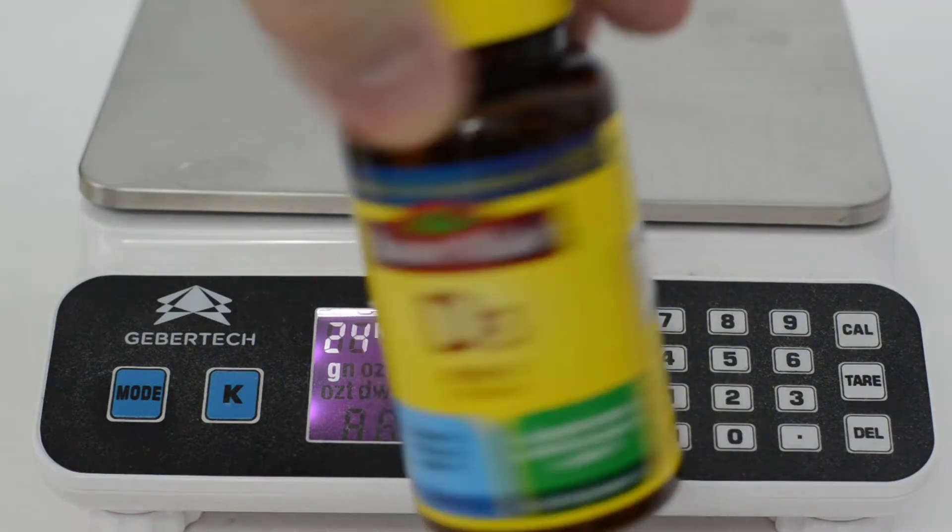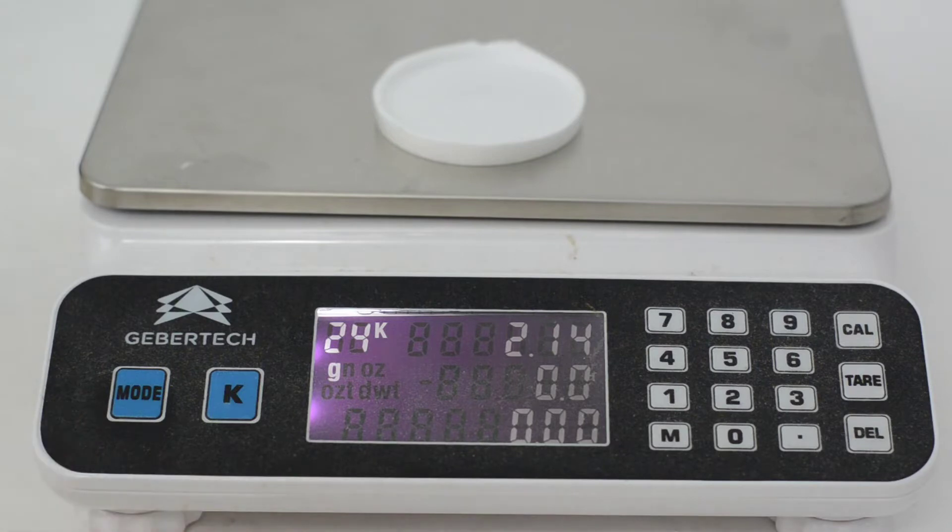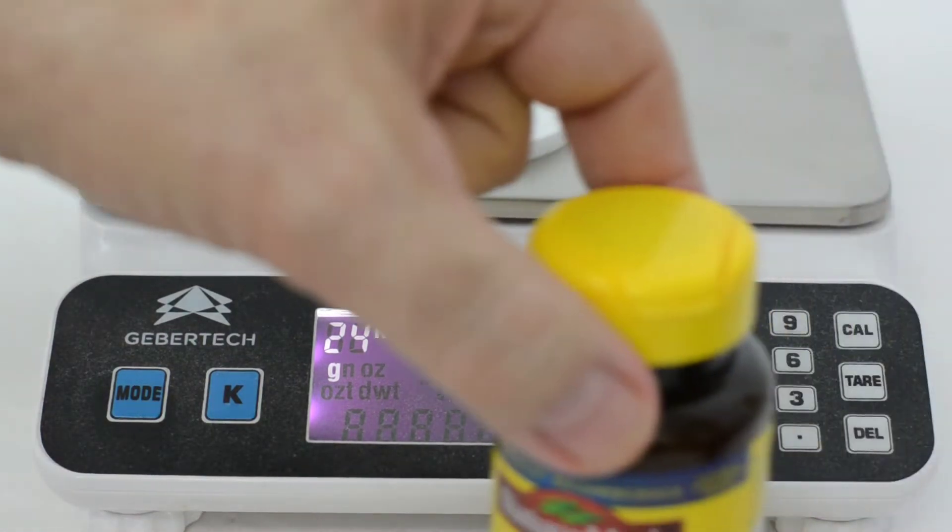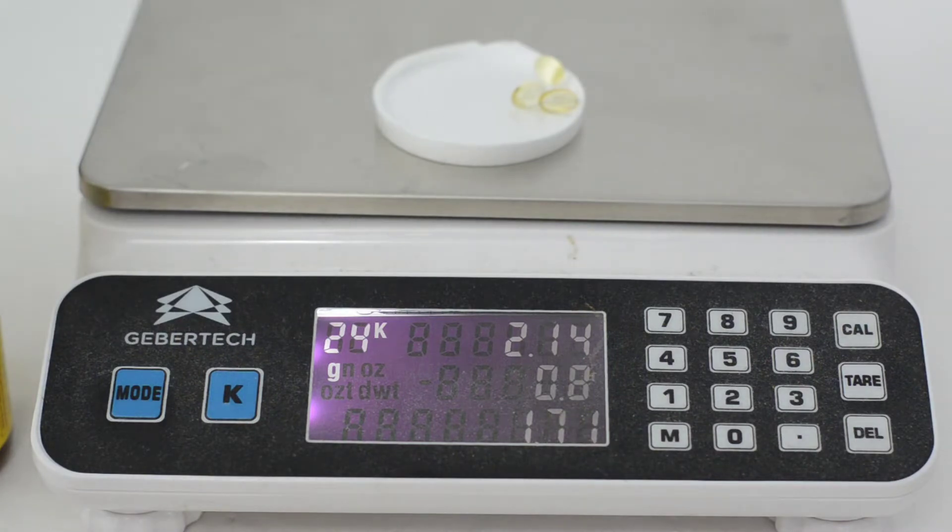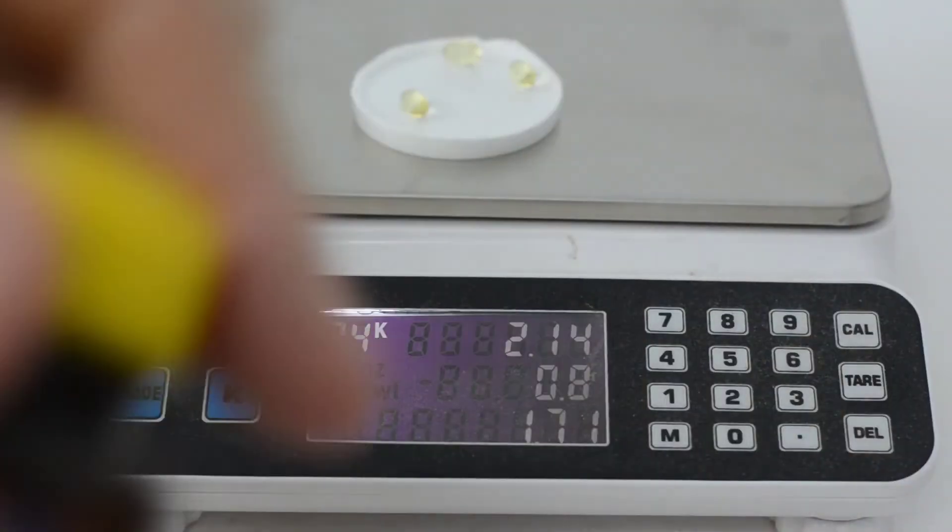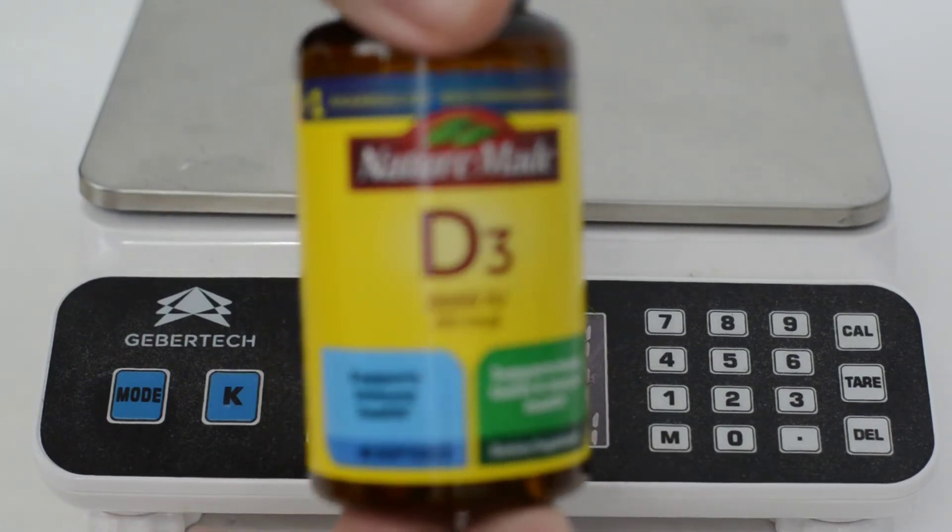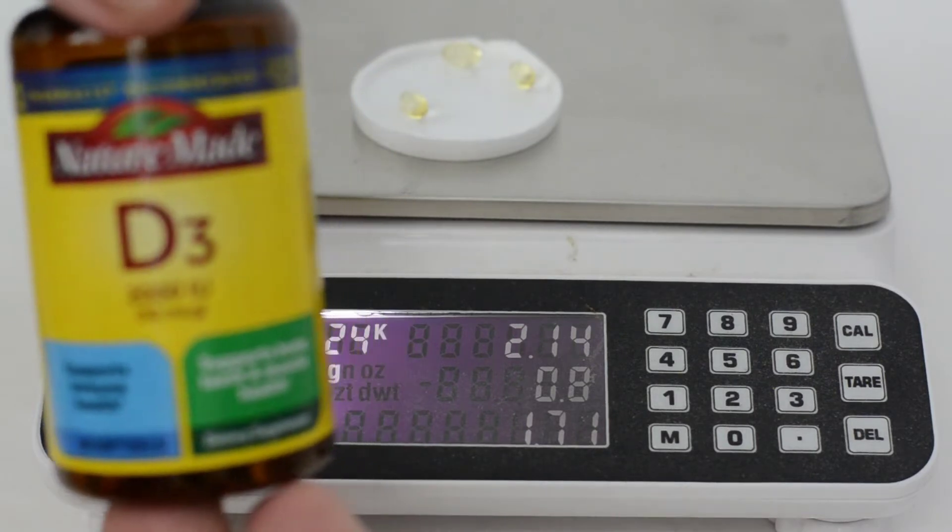All right, so first thing I'm going to do is I'm going to weigh the non-certified. All right, I'm going to take three of these, which is what I take every day. I take three, which is 6000 IU of vitamin D3. So this is going to be the non-certified. 0.8 is what it's showing. 0.8 of a gram. All right, so now we know what this is. Again, this is the non-certified. The non-certified is 0.8 of a gram.